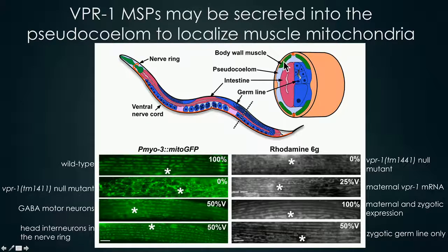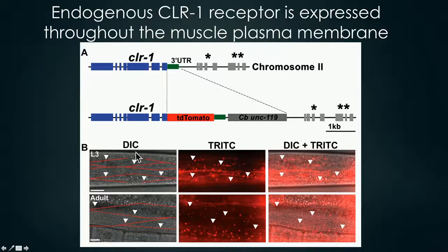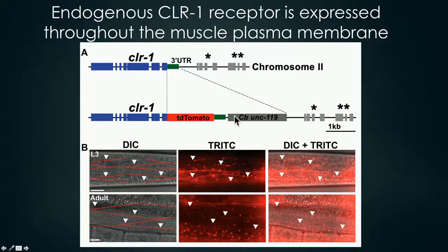Since we know MSP's receptor is the CLEAR1 LAR-like receptor, we used CRISPR-Cas9 to knock in a TD tomato into the three prime locus of the CLEAR1 gene and looked for its endogenous expression. We found that endogenous CLEAR1 expression occurs all throughout the muscle membrane. This muscle membrane has direct access to the pseudocoelom, which is consistent with the idea of MSP being secreted and then acting on its target receptor on the muscle surface, beginning the process of remodeling the muscle mitochondria.